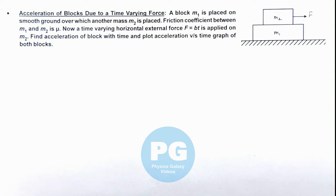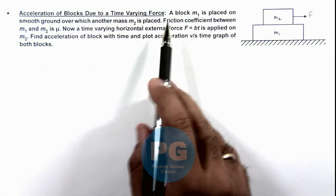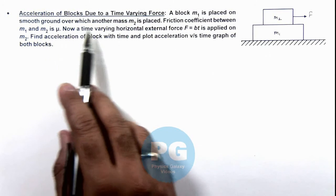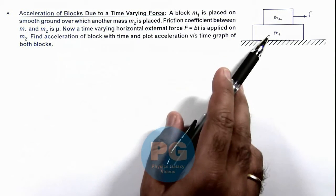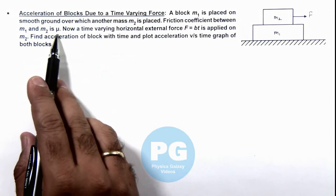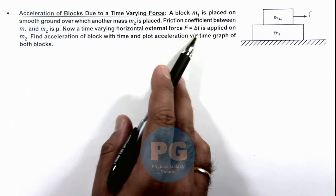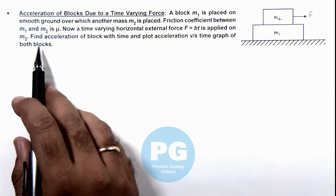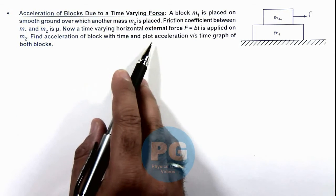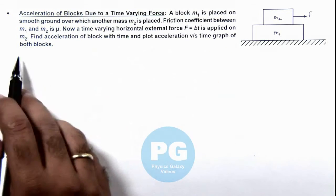This illustration is about understanding the acceleration of blocks due to a time-varying force. We are given that a block m1 is placed on a smooth ground, over which another mass m2 is placed. The friction coefficient between m1 and m2 is mu. A time-varying horizontal external force F = bt is applied on m2. We are required to find the acceleration of each block with time and plot the acceleration versus time graph for both blocks.